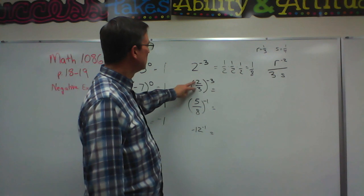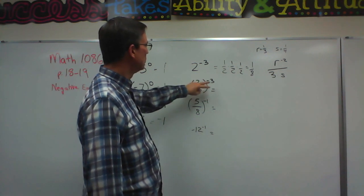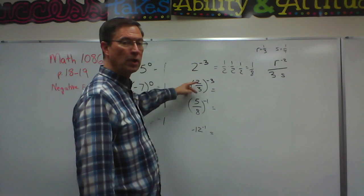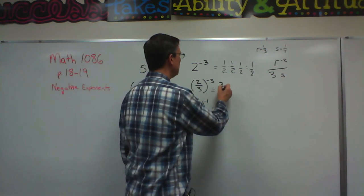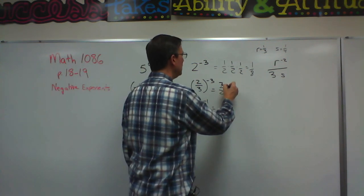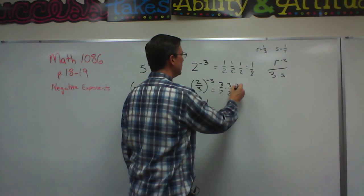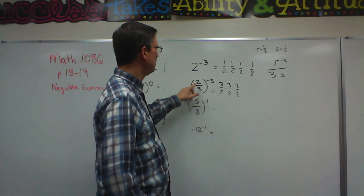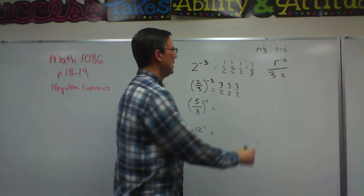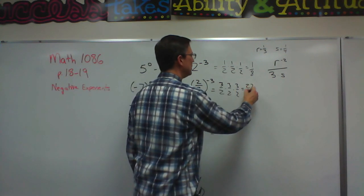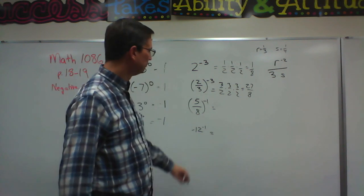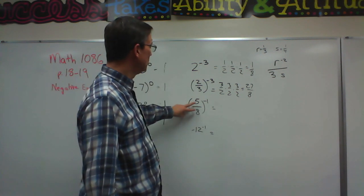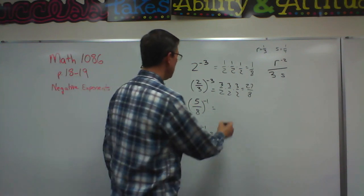Let's take this one. This is two-thirds to the negative third. The negative tells me that I'm going to flip it, and it becomes three over two times three over two times three over two. Three means three of them. The negative means I'm doing the reciprocal, and so the answer is twenty-seven over eight. If it's to the negative one exponent, that's pretty easy because we just do the reciprocal. Eight-fifths, and we're done.